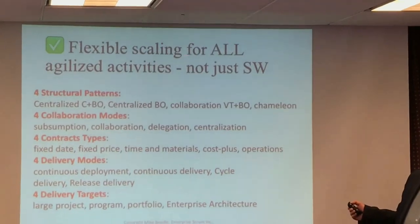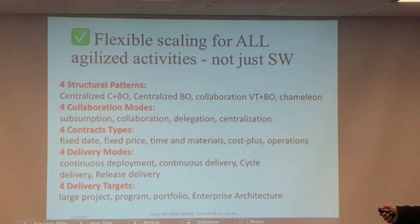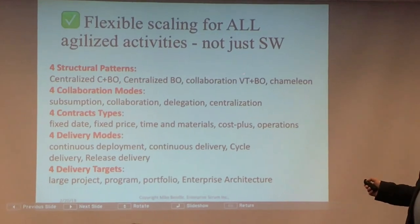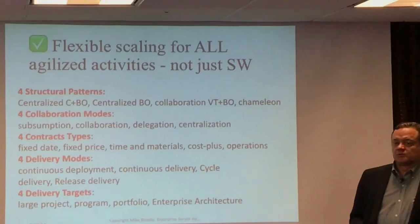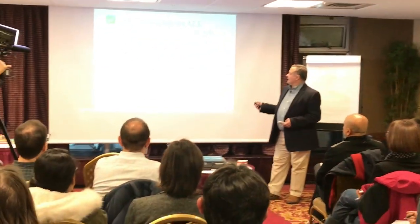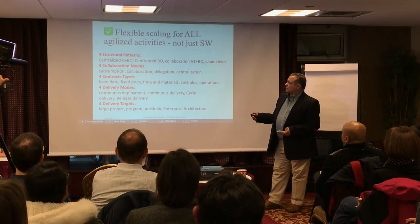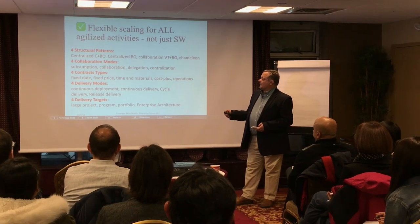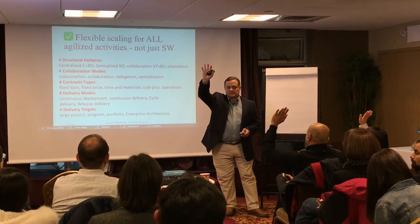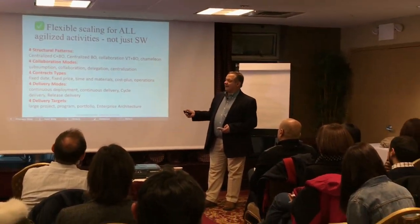Let's talk a little bit about the flexible scaling, not only for agile activities. We have four structural patterns: centralized coach and business owner, centralized only product owner or business owner, collaboration — or what we call potluck scaling, which is our signature pattern and what really stages our scaling from other types of scalings — and we have now a coordinator or someone that has a centralized mode. We also have different collaboration modes. We have not only centralized, like SAFe or LeSS, which is only centralized. We also have delegated and collaboration.